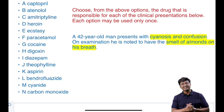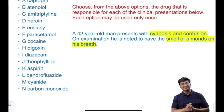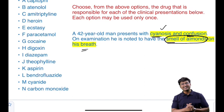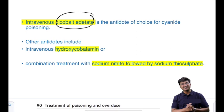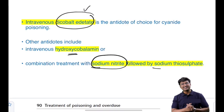The fifth clinical scenario: a 42-year-old man presents with cyanosis and confusion; on examination he is noted to have the smell of almonds on his breath. This is cyanide toxicity. The antidote of choice for cyanide poisoning is dicobalt edetate given intravenously. Other antidotes include intravenous hydroxocobalamin or the combination of sodium nitrite followed by sodium thiosulfate.